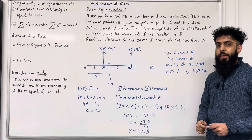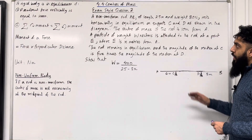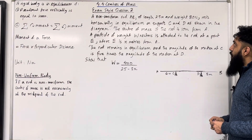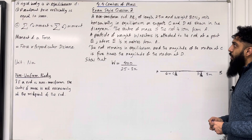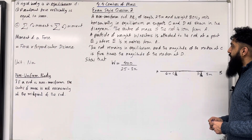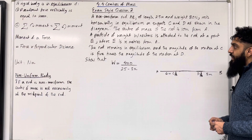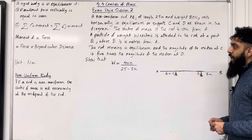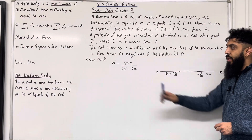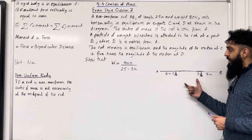This completes exam style question 1. Moving on to exam style question 2. A non-uniform rod AB of length 25 metres and weight 80 Newtons rests horizontally in equilibrium on supports C and D as shown in the diagram. The centre of mass of the rod is 10 metres from A. A particle of weight W Newtons is attached to the rod at point E, where E is X metres from A. The rod remains in equilibrium and the magnitude of the reaction at C is 5 times the magnitude of the reaction at D. Show that W equals 400 over (25 minus 3X).